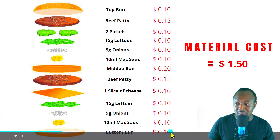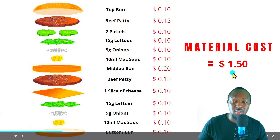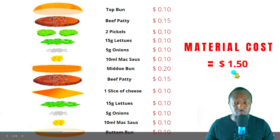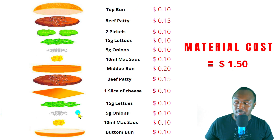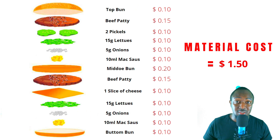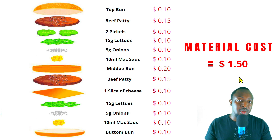When we calculate all these material costs, one burger is costing McDonald's $1.50. So for each Big Mac burger, the material cost is $1.50.